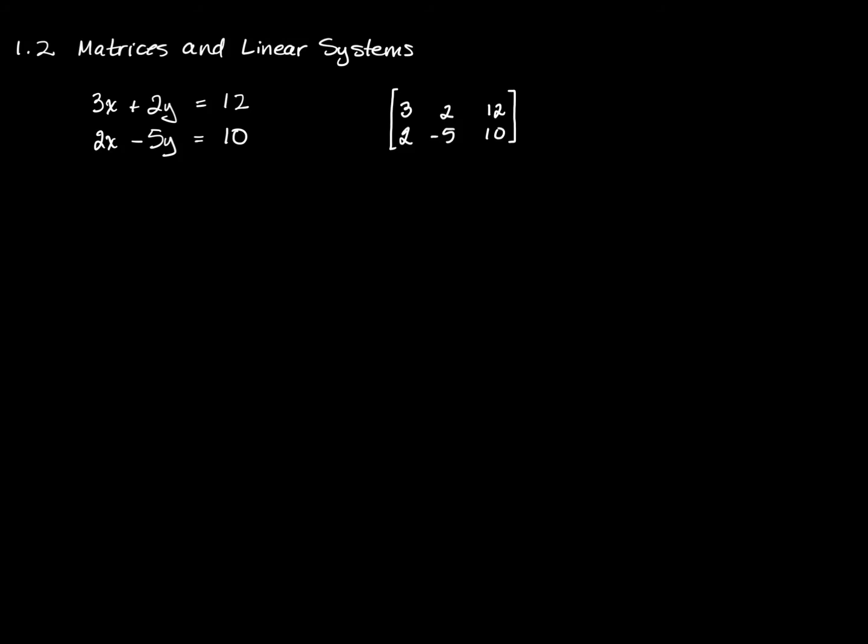It's actually called an augmented matrix because it contains entries not just for the coefficients of the variables, but for the answers to the equations as well. Not the answers, but the values on the right-hand side of the equal sign. Sometimes you'll see an augmented matrix with a vertical line separating the entries of the coefficients from the entries of the constant terms. So this is an augmented matrix. I don't actually need that line down the middle, so I'm going to go ahead and erase that for now because I want to talk a little bit about something else here.